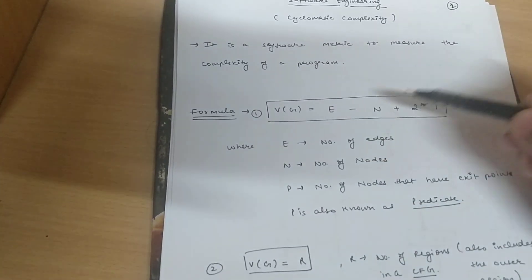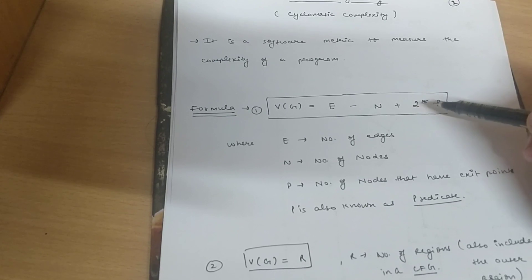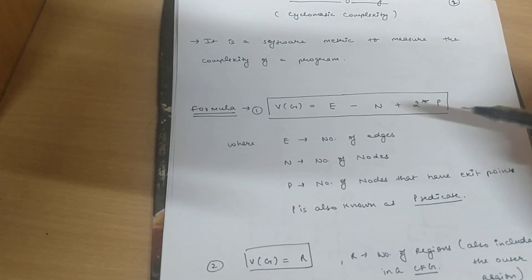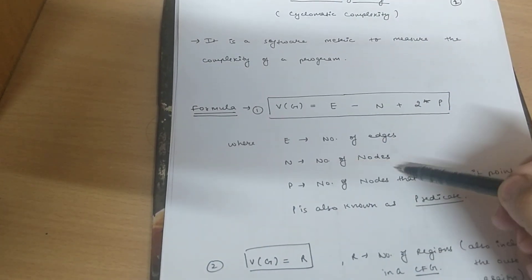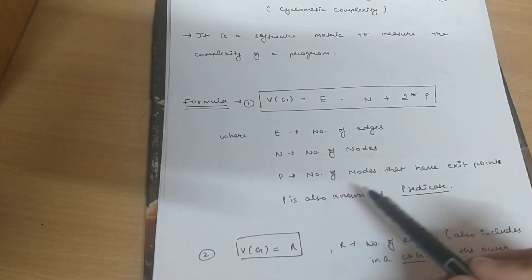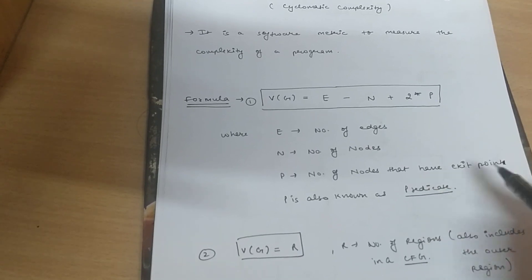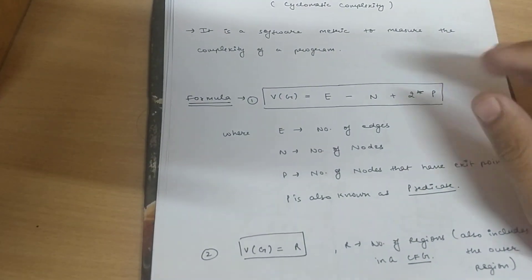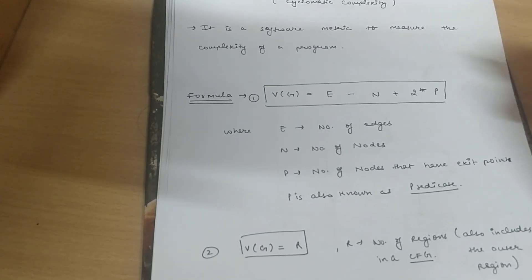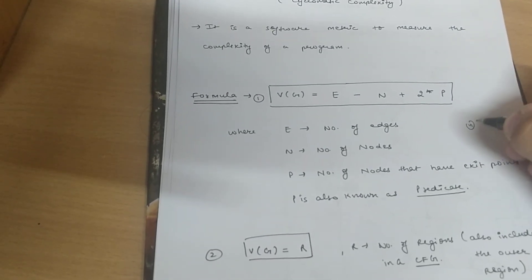Vg equal to E minus N plus 2 star P. Where E denotes the number of edges, N denotes the number of nodes, P denotes the number of nodes that have exit points. Basically these are the independent nodes that do not have any further nodes. For example, 4 tends to 5.